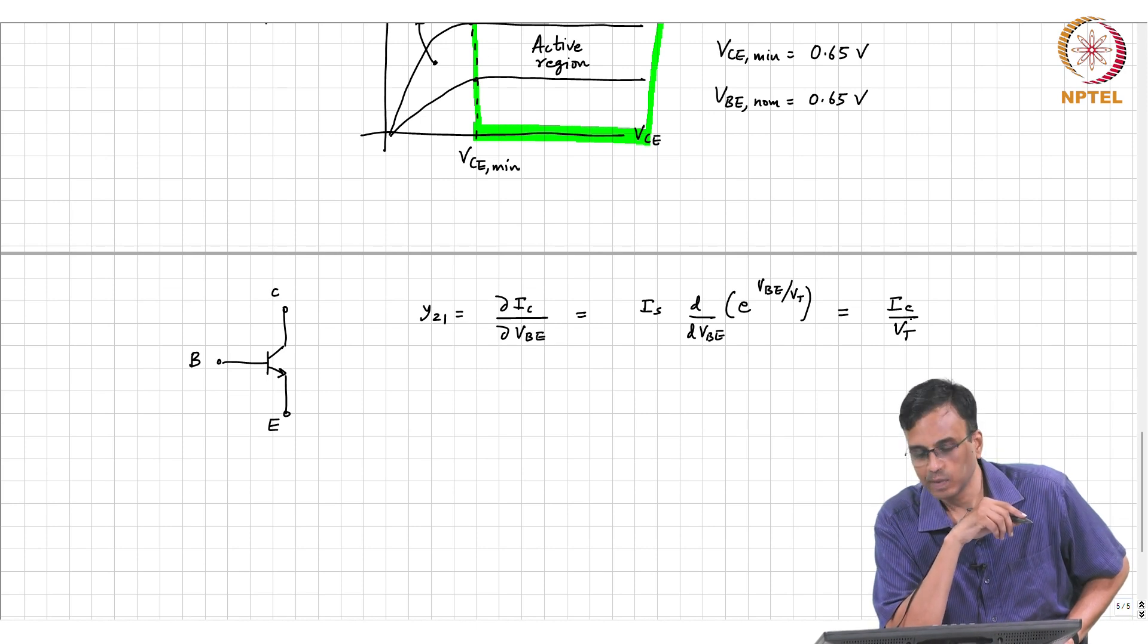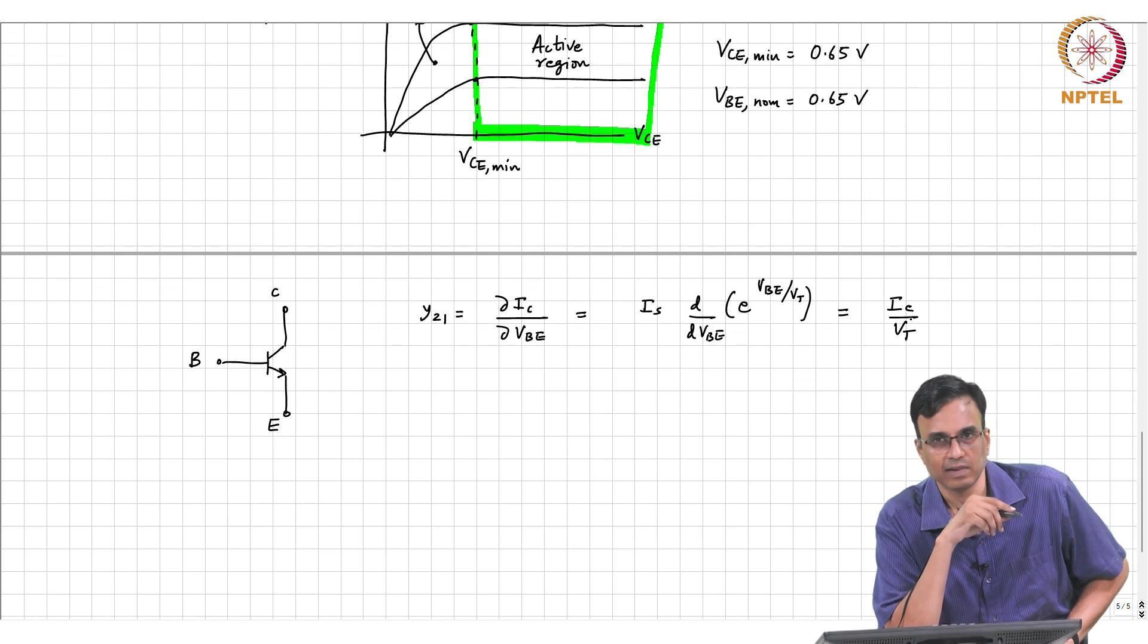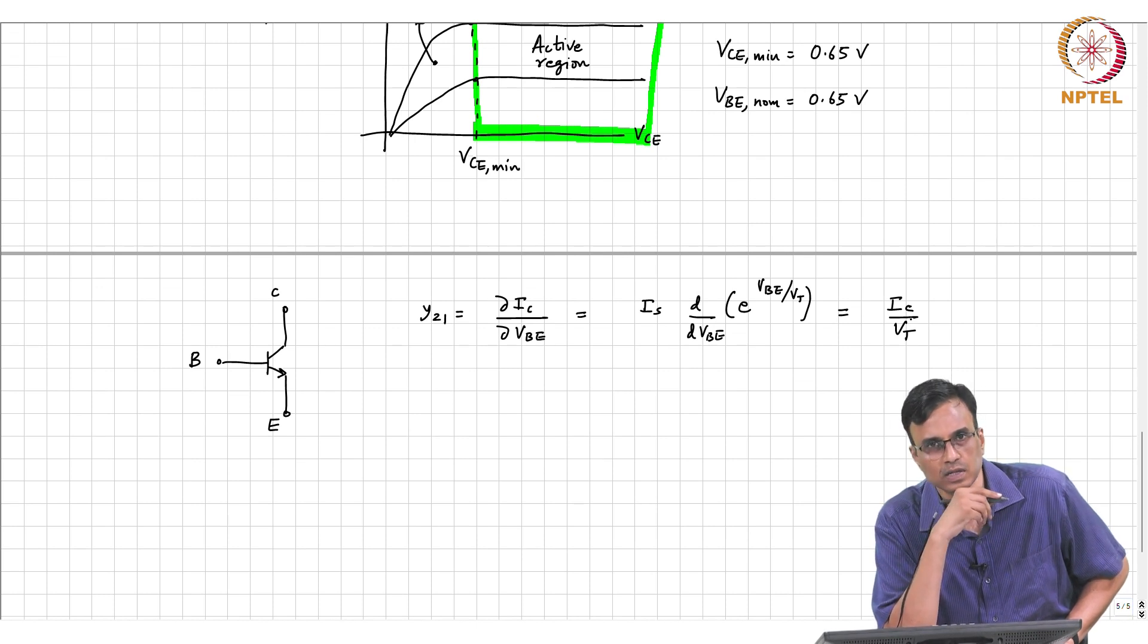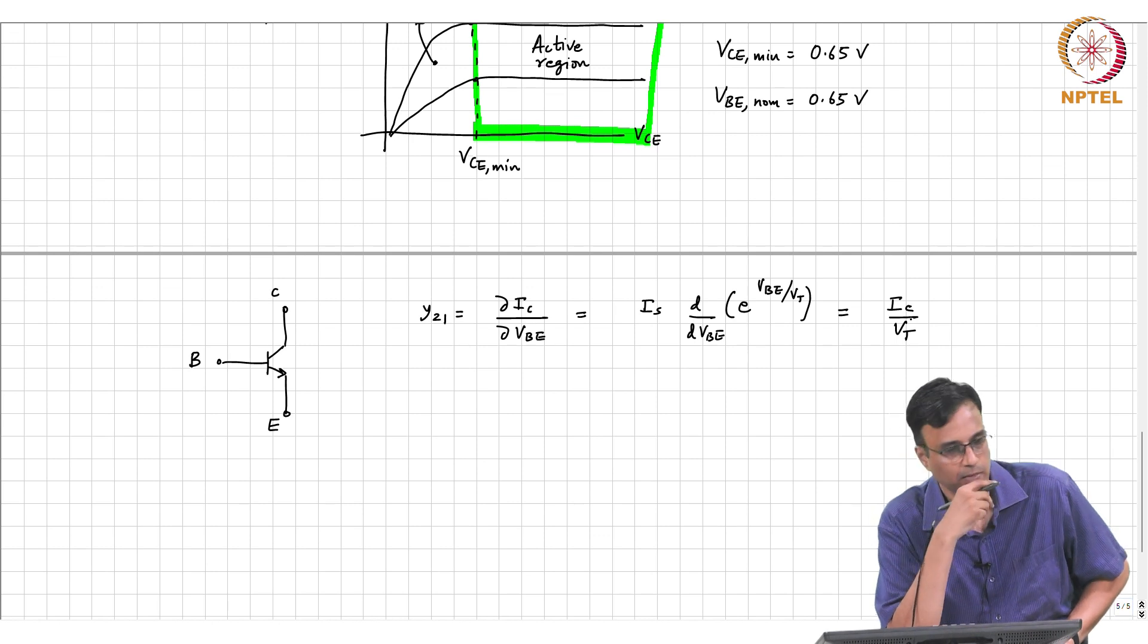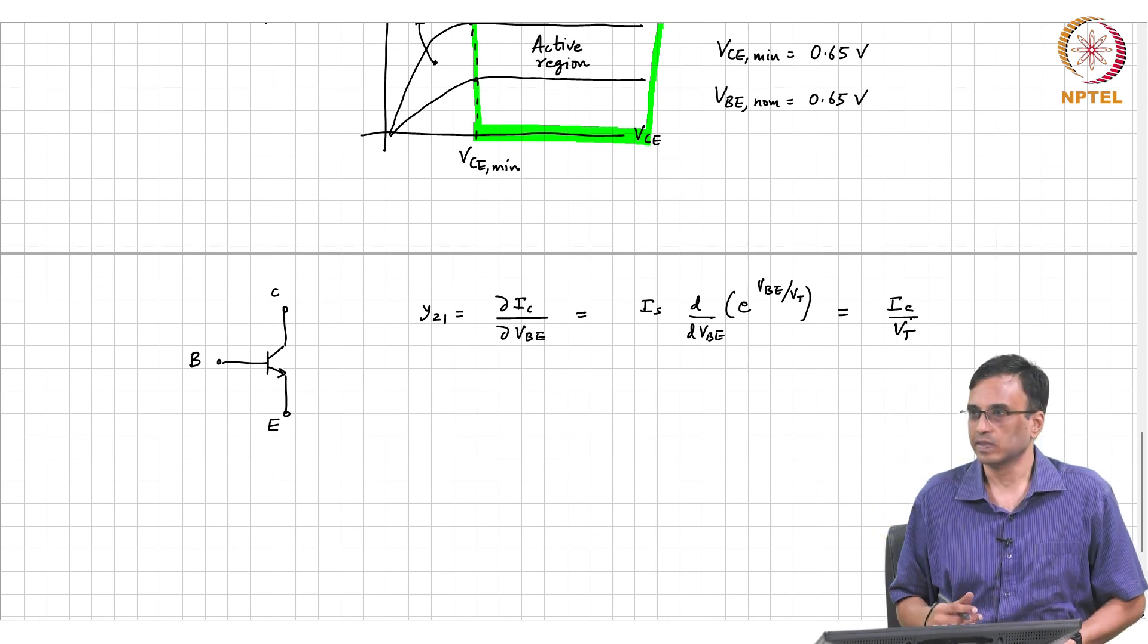The nice thing about this is that regardless of the saturation current IS, the transconductance of the device is simply IC over VT, where VT is the thermal voltage. There is no square root mu and Cox; calculation of the transconductance is very simple.